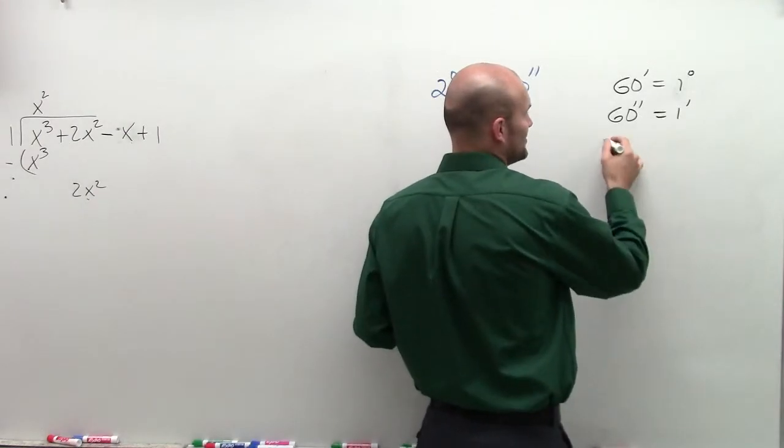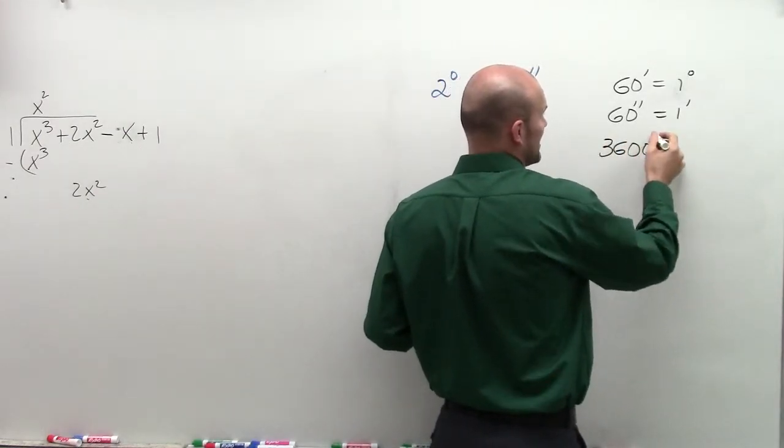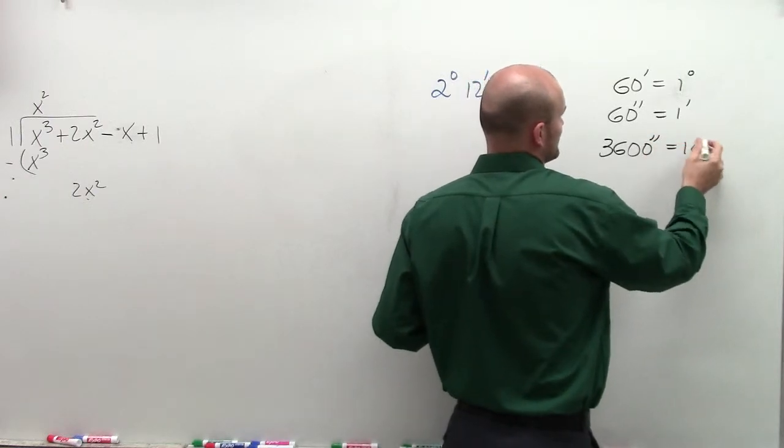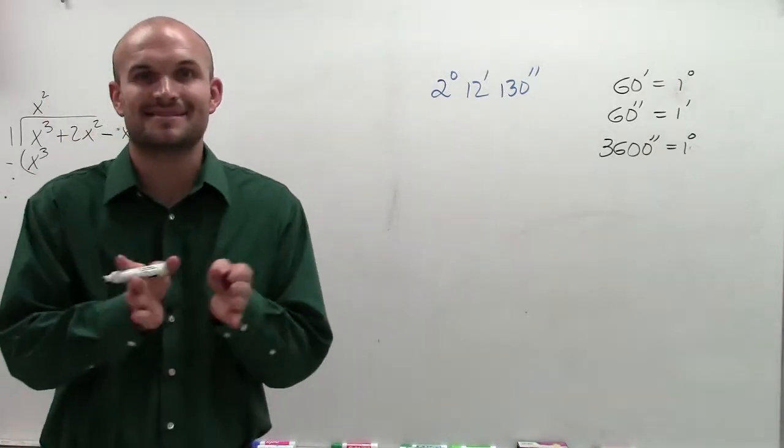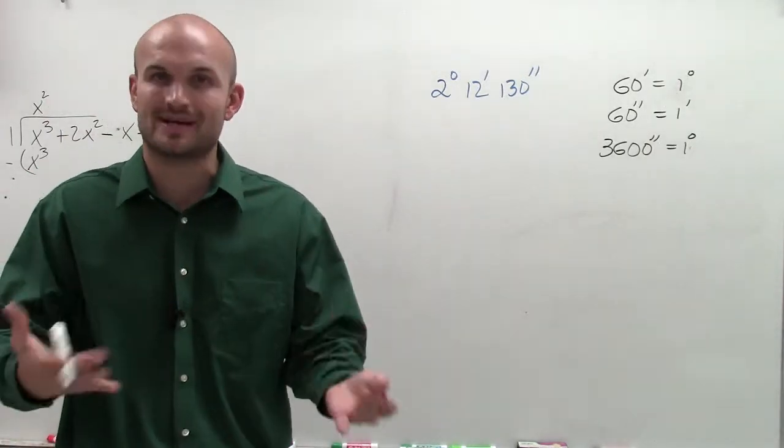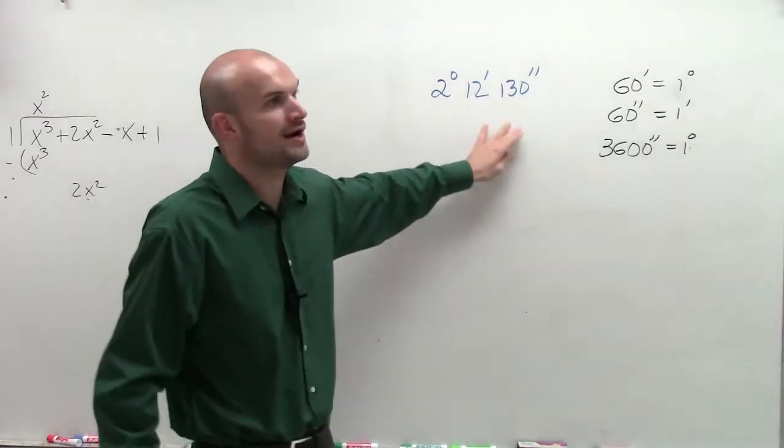So therefore, you can say that 3,600 seconds equals, I don't know why I keep on writing 10, equals one degree. So it's just like seconds, minutes, and hours, but we're using degrees, which is going to be our unit of measurement for our angles.